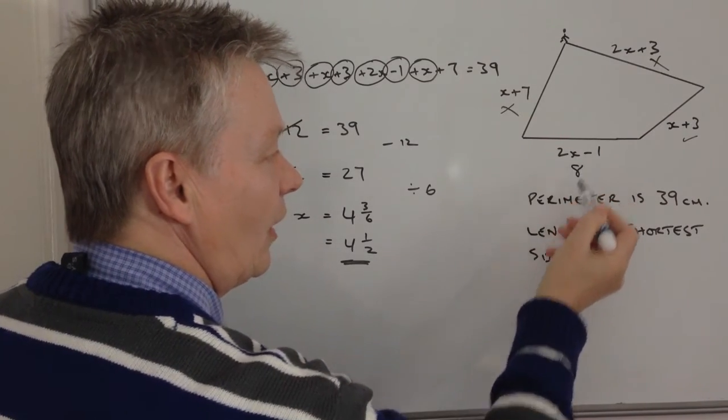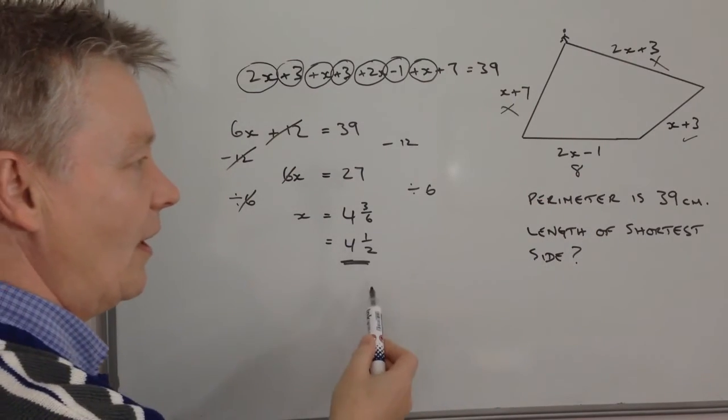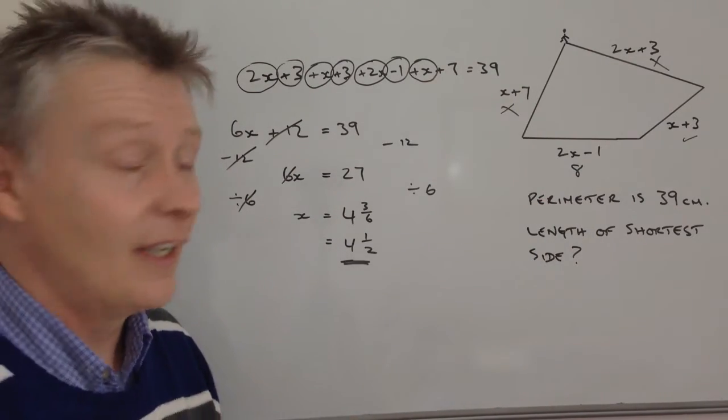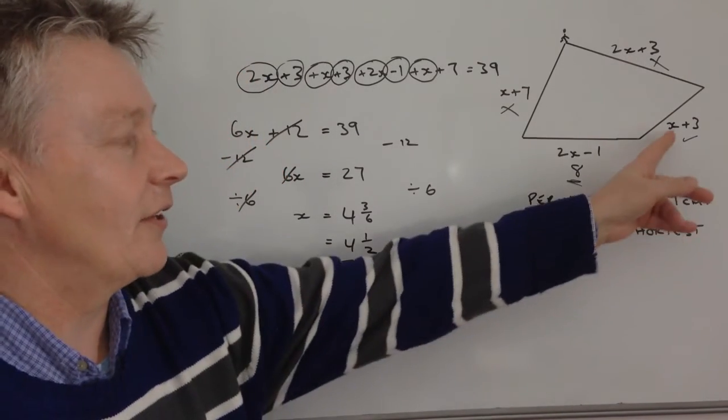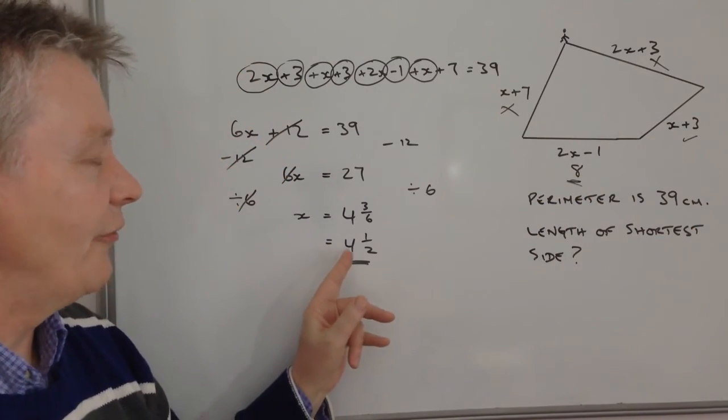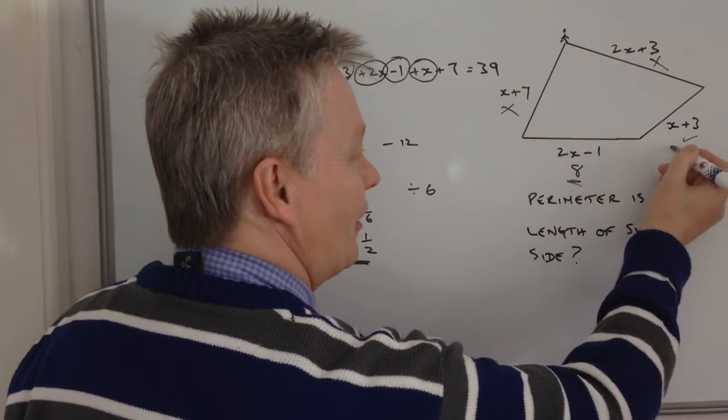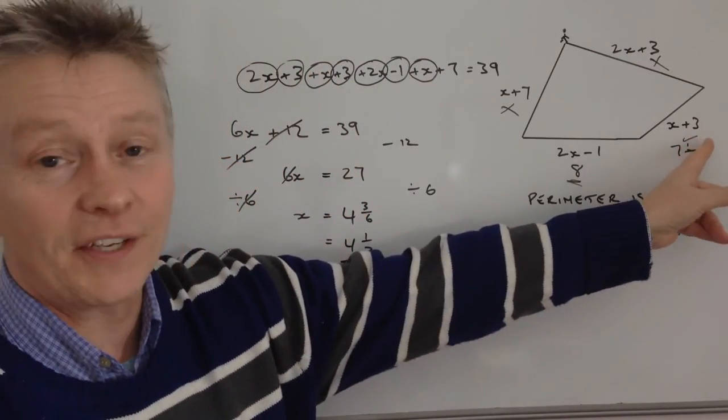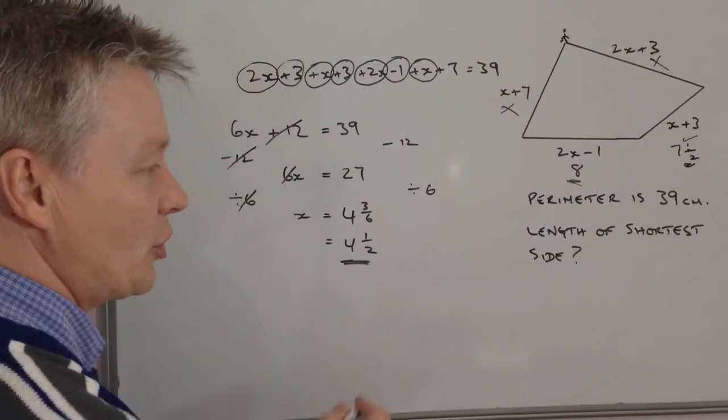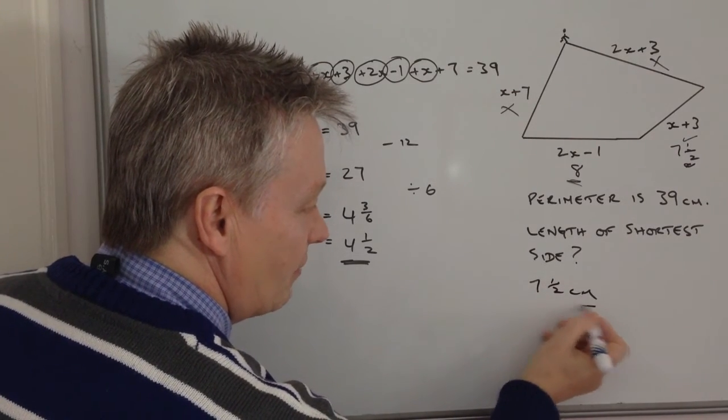So this one, all I've done is I've taken the value of X, and I've said 2 times 4 and a half is 9, and then minus 1 is 8, so this is 8, and then on this side I've got 4 and a half plus 3, so that's 7 and a half. So my instinct was correct that it is actually this side here, the length of the shortest side is 7 and a half centimeters.